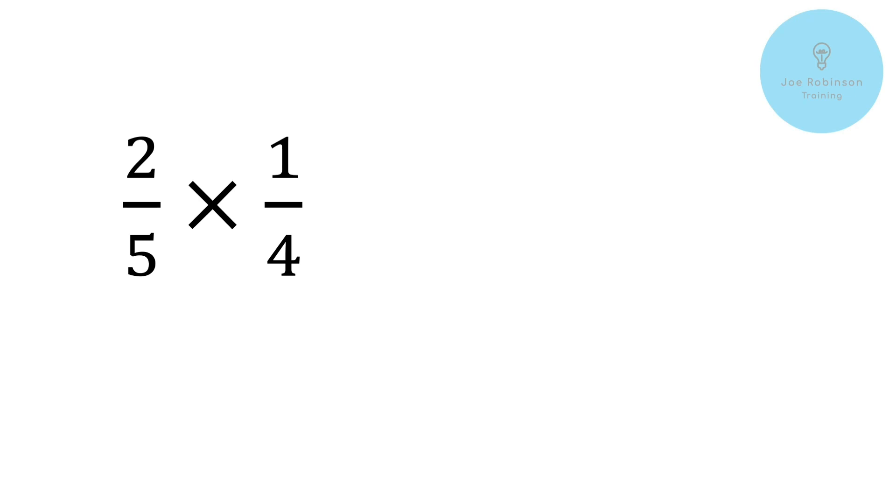So again remember pause the video, have a go at the question. If you then play the video you'll be able to see if you've got the right answer by following along with what I do. So let's have a look at this. We've got two fifths times by one quarter. So we've got two fifths multiplied by one quarter. So again we multiply the top two numbers together, two times one that's going to give us two.